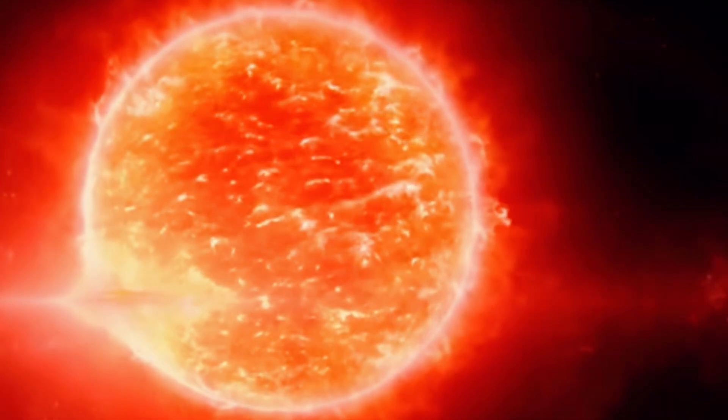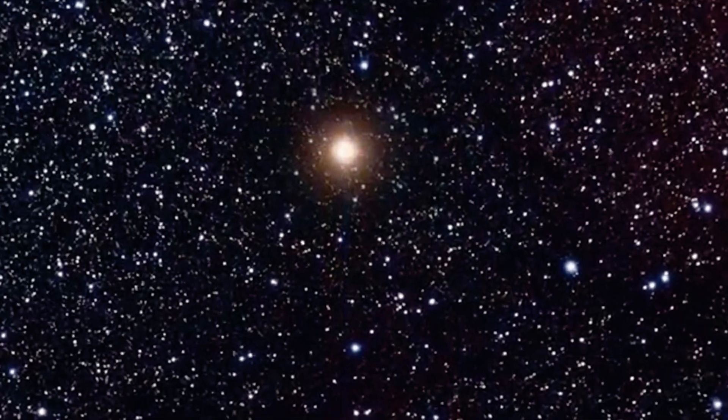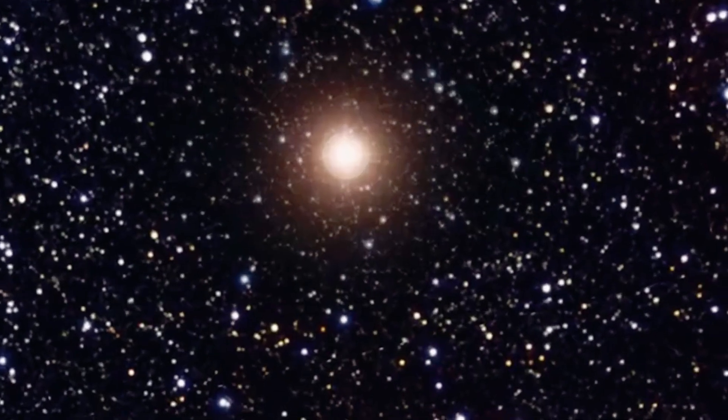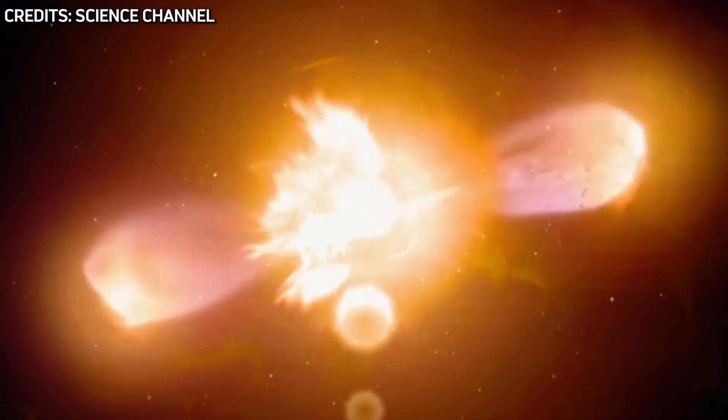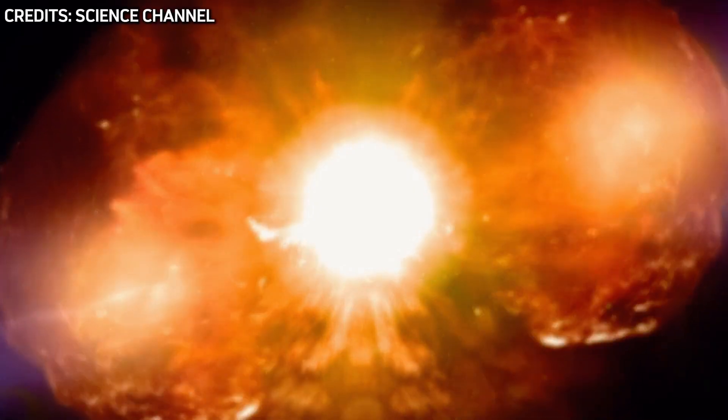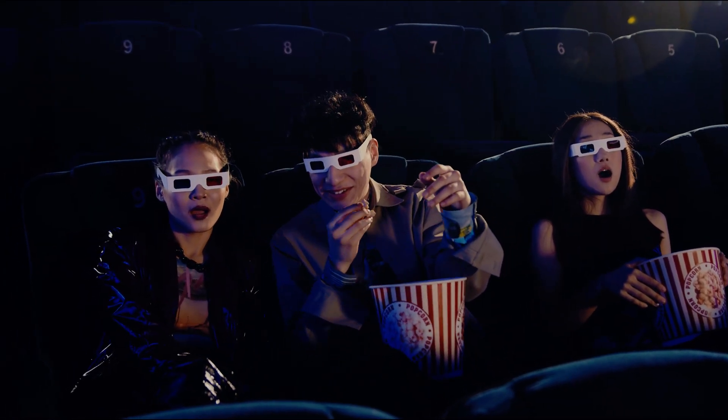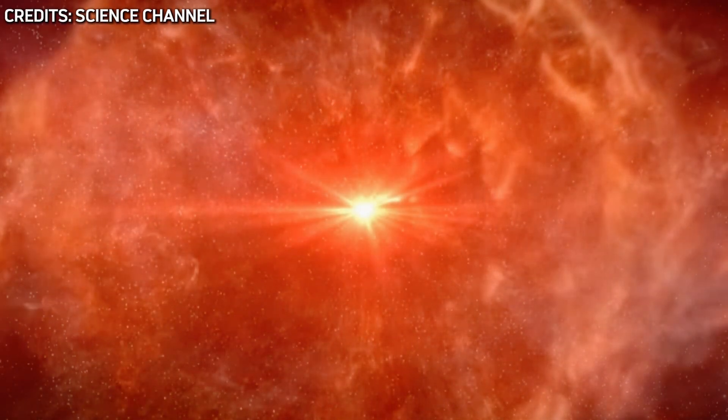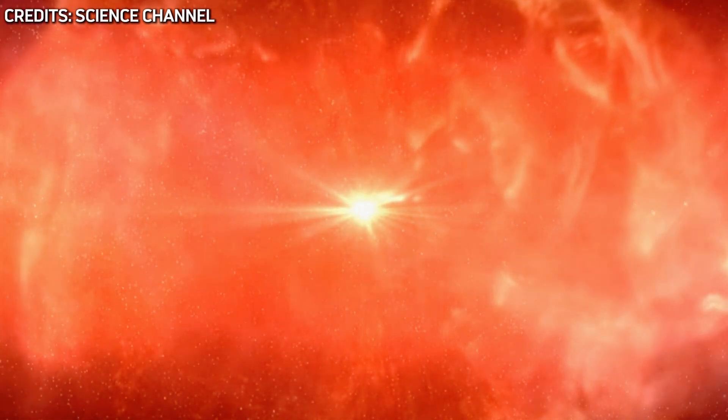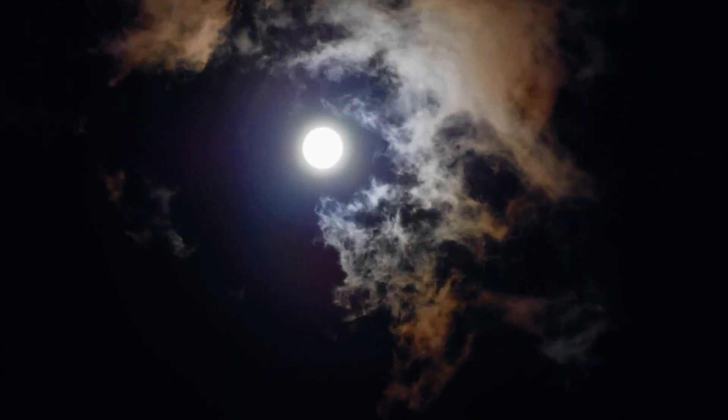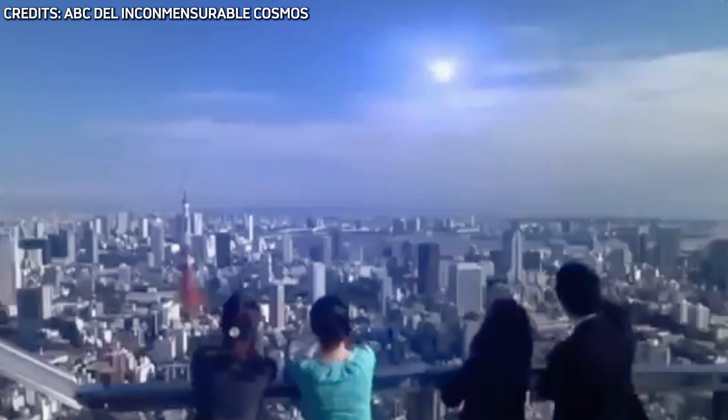Betelgeuse, one of the brightest stars in our night sky, is a red supergiant sitting just 640 light-years away and nearing the end of its life. When it finally explodes into a supernova, it will be a spectacle unlike anything humanity has ever witnessed. Imagine a second sun appearing in the sky. That's how bright Betelgeuse will become when it detonates. For weeks, it could shine as brightly as the full moon, visible even during the day.